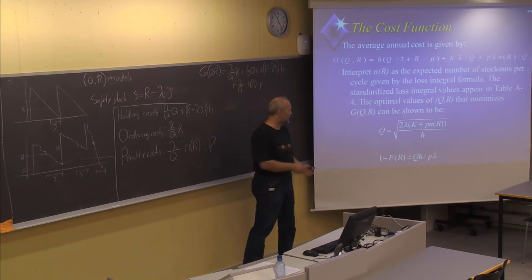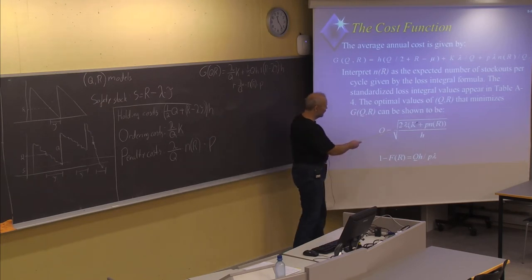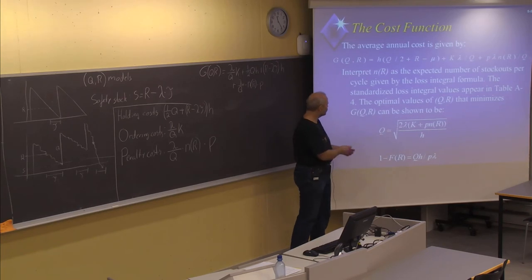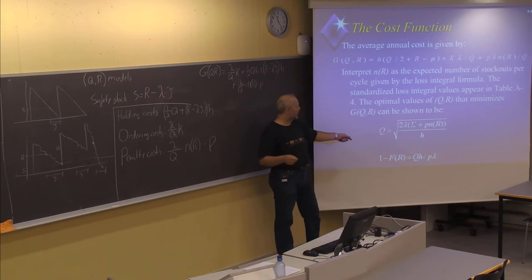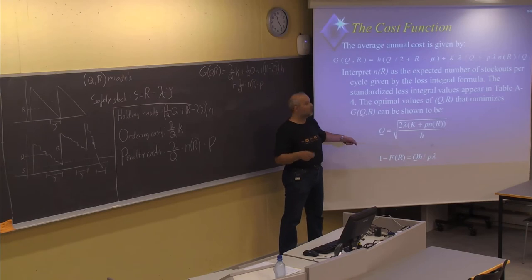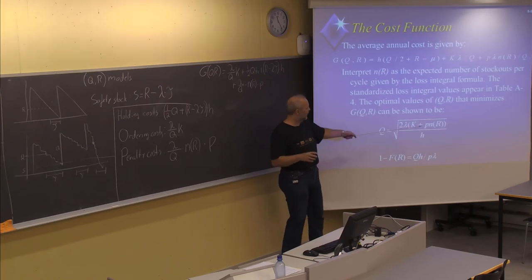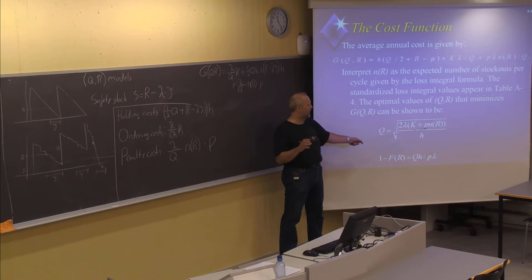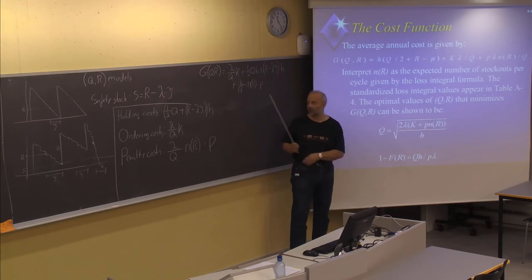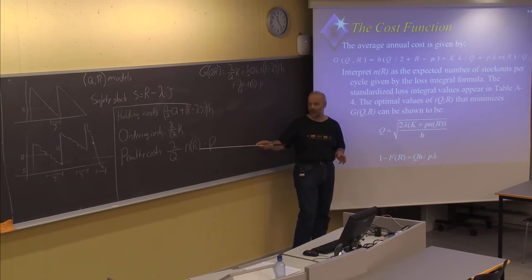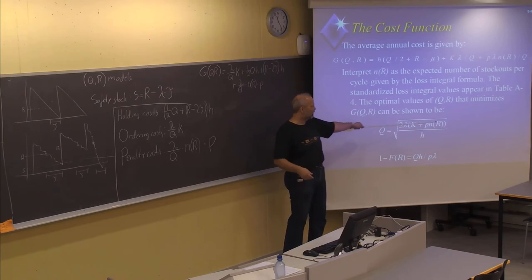We can see that the first part is similar to the EOQ formula: 2 multiplied by the demand, multiplied by K the ordering cost per order, divided by the holding cost. But in addition, we have the last part — P, the penalty per unit — multiplied by the N(R) function, which describes the expected number of units short for a given value of the reorder point R.